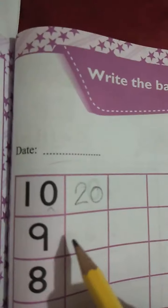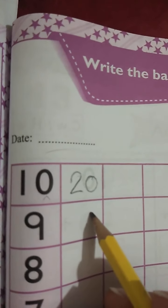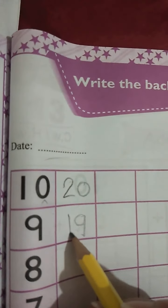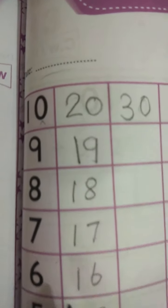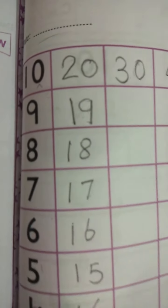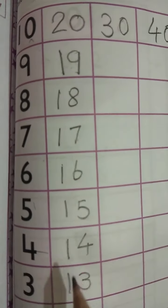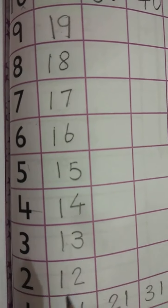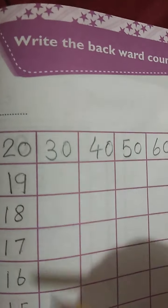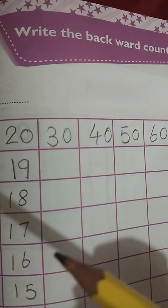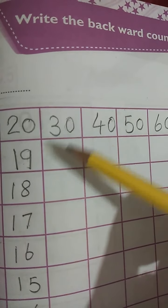After 20 you will write 19, after 19 then 18, then 17, 16, 15, 14, 13, 12, 11. So like this backward counting, you will start all the numbers from the back side, like usually you have started